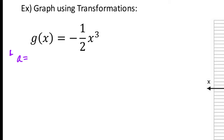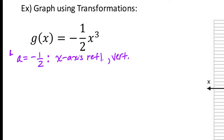The 'a' value is negative one half. There are two things happening: the negative and the one half. The negative tells us we have an x-axis reflection — we flip it over the x-axis. The one half is between zero and one, so that means it's a vertical compression by a factor of one half.